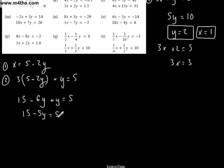15 minus 5y equals 5. Add 5y to both sides, subtract 5, 10 equals 5y, and y equals 2. Then I simply substitute that back in. If y equals 2, 5 minus 2 lots of 2 is 5 minus 4, and x equals 1.